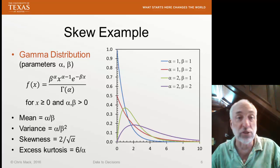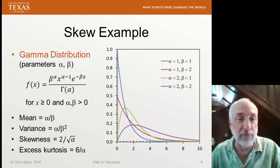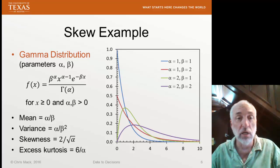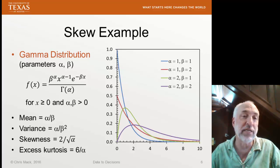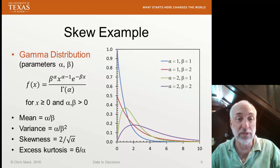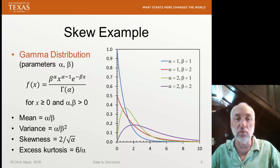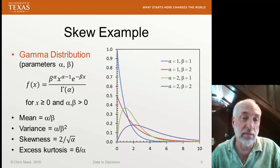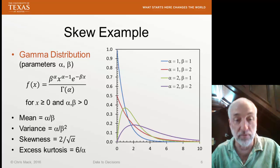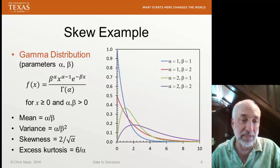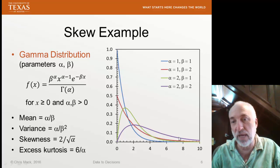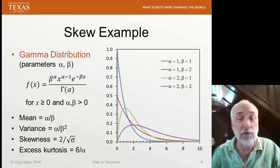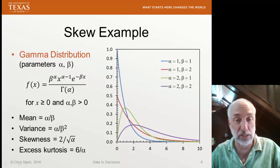Here's an example of a skewed distribution: the gamma distribution. The PDF has two parameters, alpha and beta, and is defined for x greater than zero with alpha and beta both greater than zero. The mean is alpha divided by beta, the variance is alpha divided by beta squared, and the skewness (the standardized third centered moment) is two over the square root of alpha. The larger the value of alpha, the less skewed the distribution is.